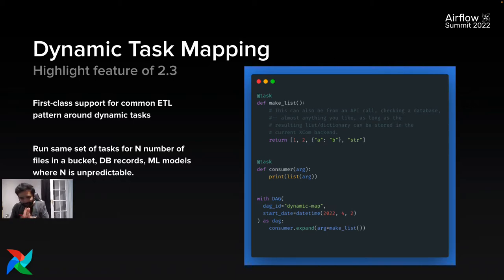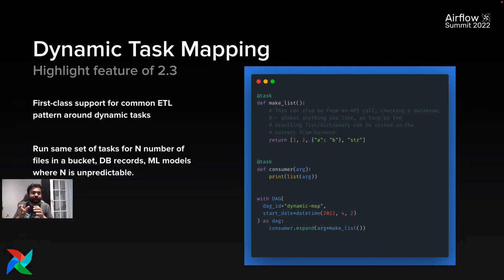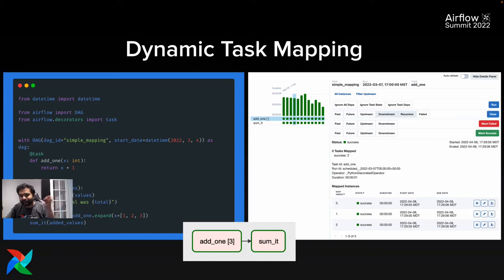If you have this hack, stop using it right now and upgrade to Airflow 2.3 to use the native support for dynamic task mapping. A simple example DAG uses a `make_list` function that mimics getting files from a bucket, and a consumer task is run on each value from the result. You use `.expand()` — a general purpose API to access task mapping — adding it to your task to iterate over its arguments.